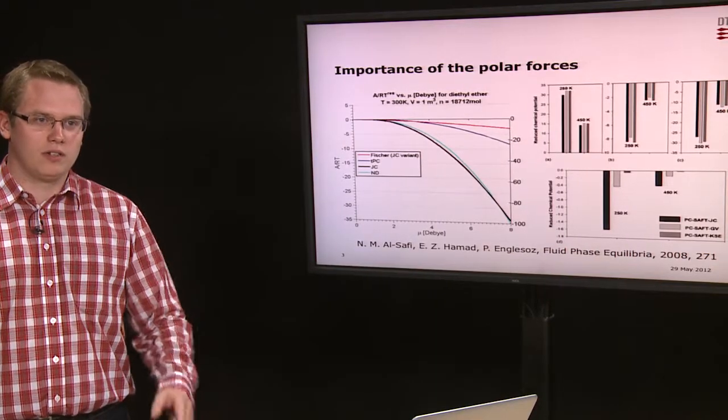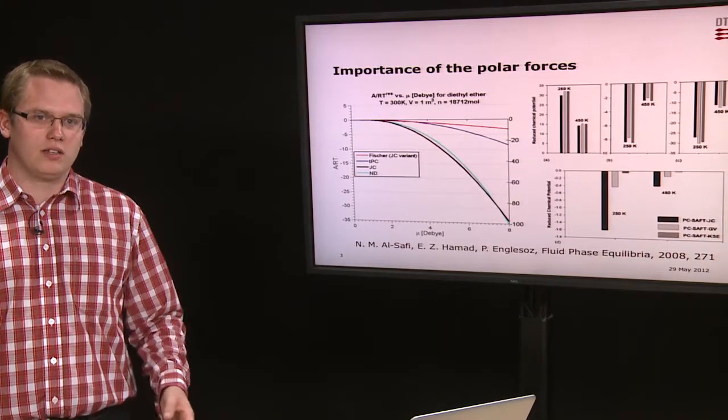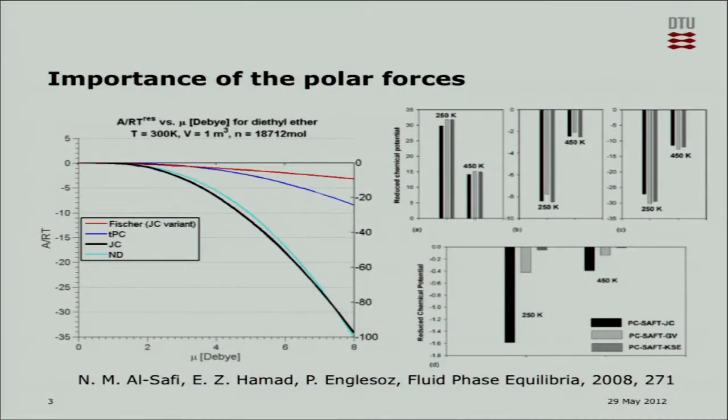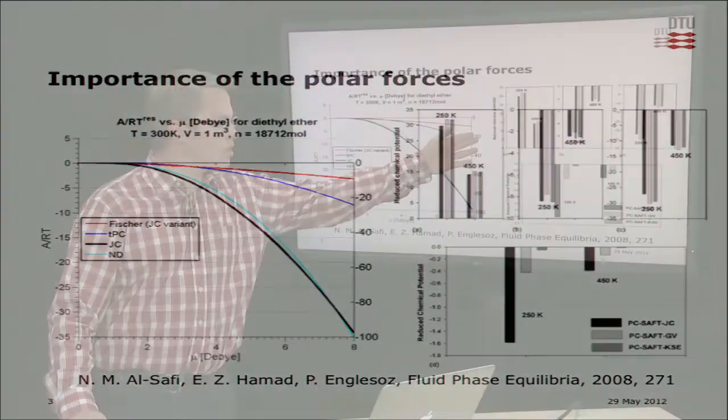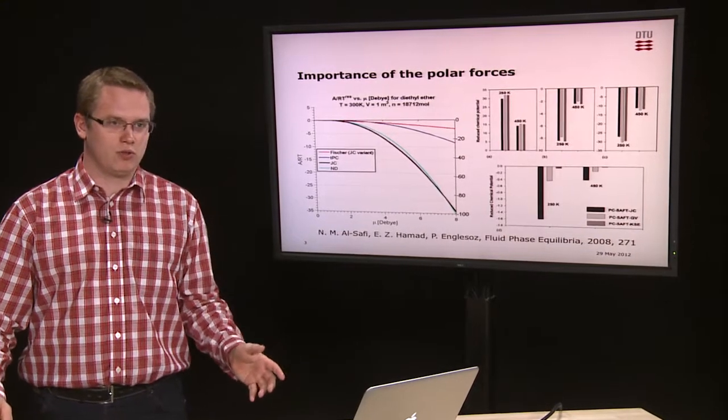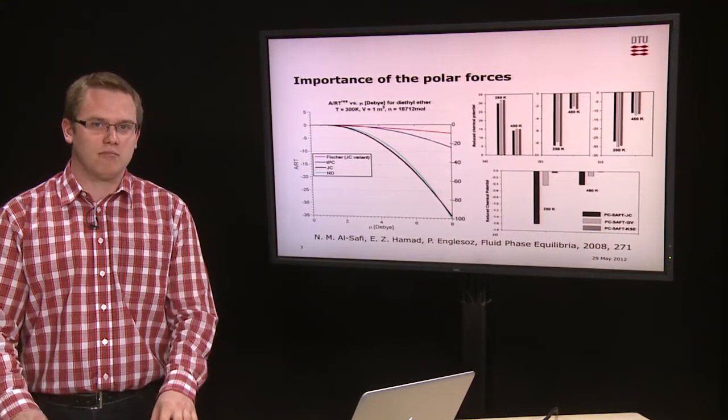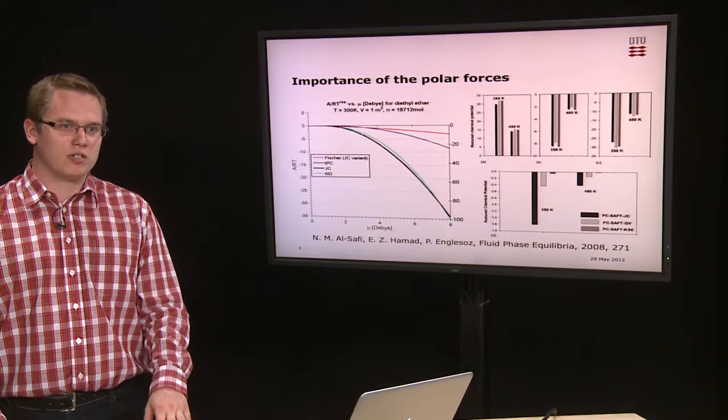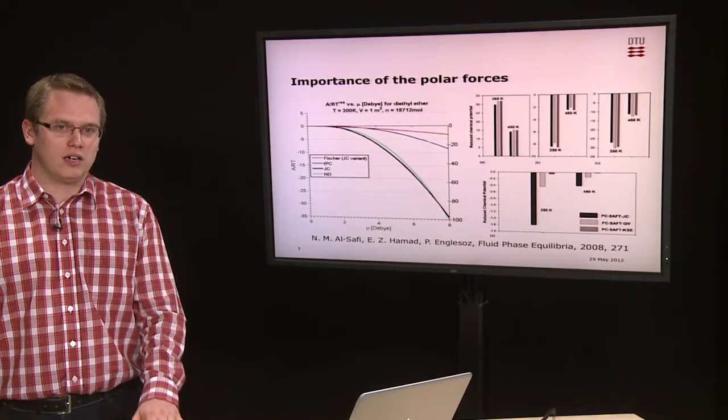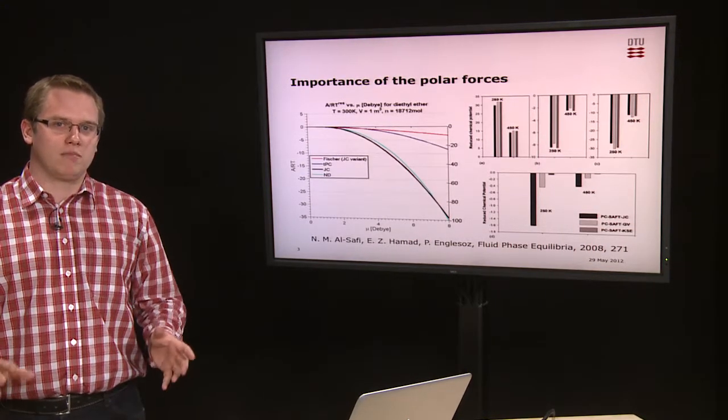Thus we observe that even if they are all polar, they contribute very differently. Another group has taken a look at this and shows that even though the base contributions are almost the same, the only term that varies very large in scale is the polar term. What are the implications of this?